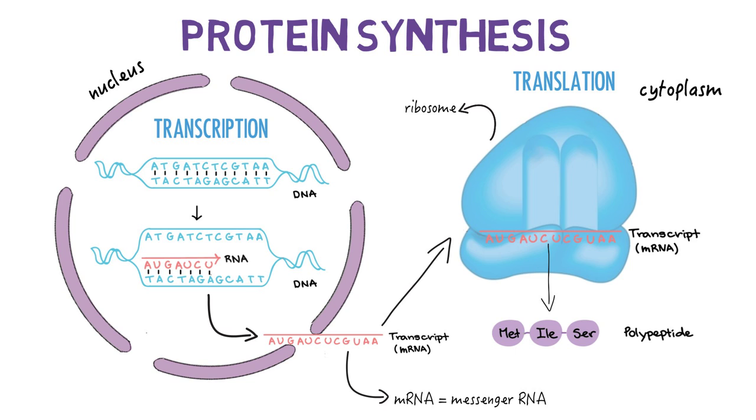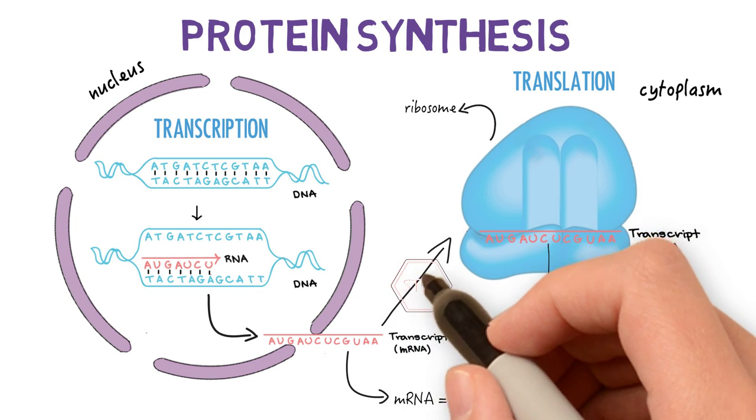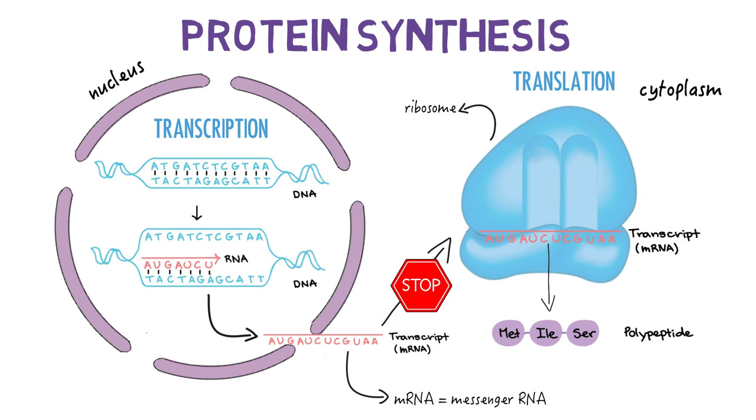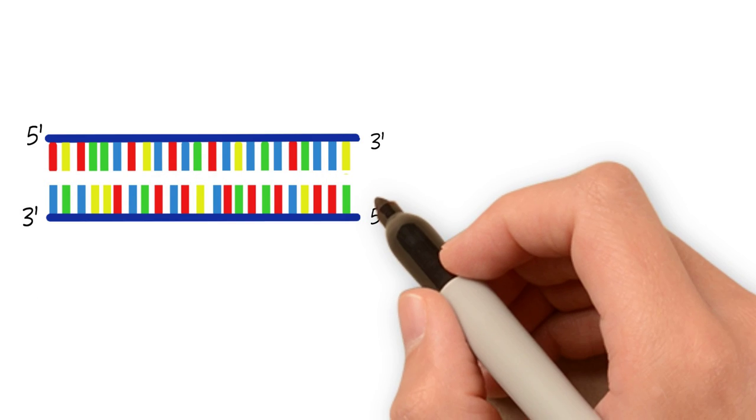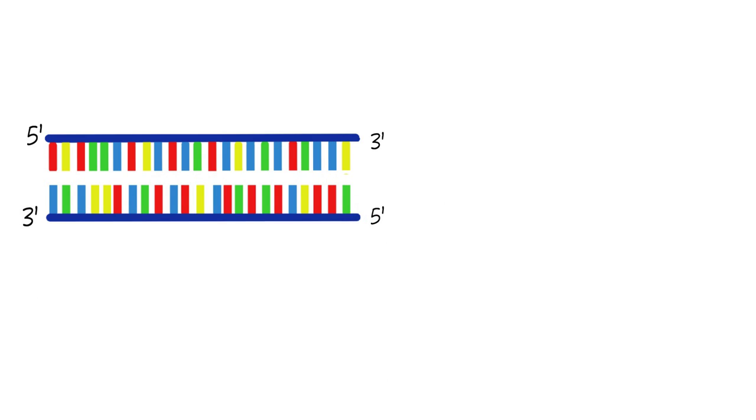But RNAi stops the process before translation by degrading the messenger RNA. Although mRNA is single-stranded, it can combine with another complementary mRNA strand to form a duplex. The strand that matches the original DNA sequence is called the sense strand, and the complementary strand is called the antisense strand.